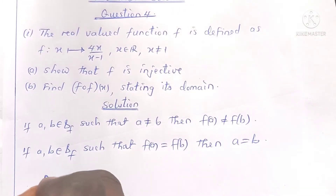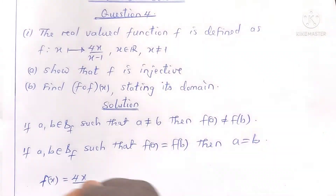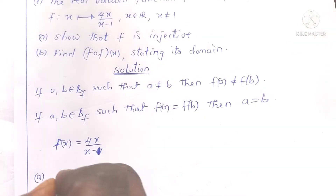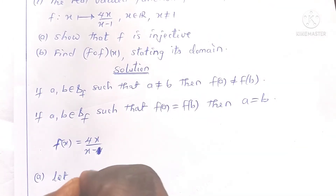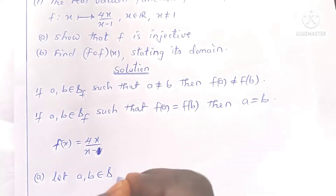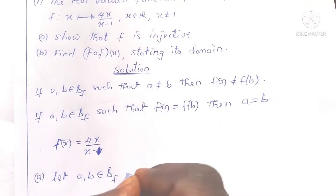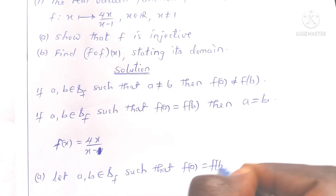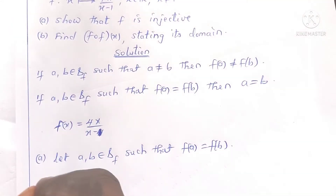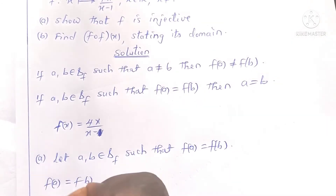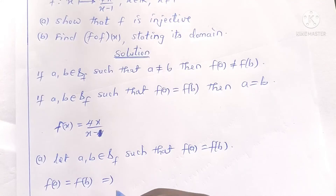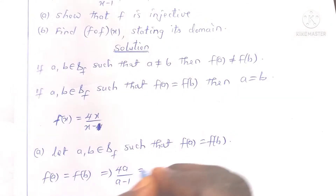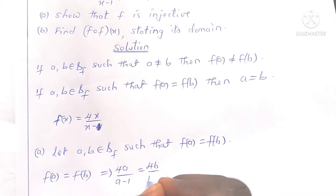In this question, f of x is given by 4x divided by x minus 1. To show that f is injective, we let a and b be two elements from the domain of definition of f such that f of a is equal to f of b. We know the image of a is 4a divided by a minus 1, and the image of b is 4b divided by b minus 1.